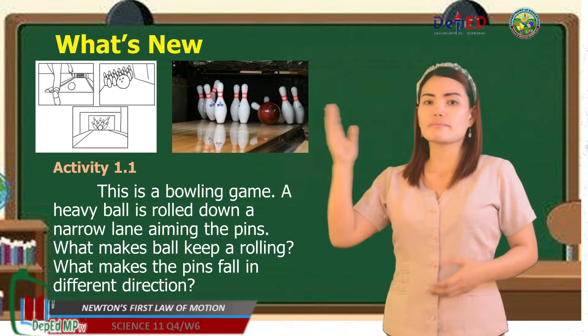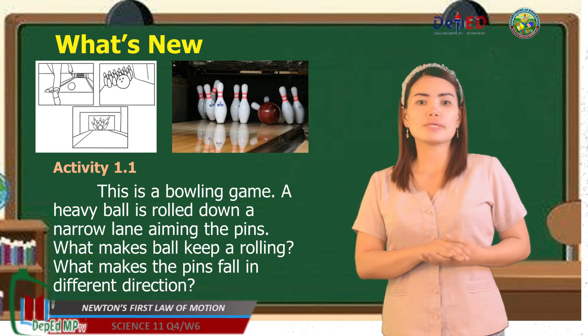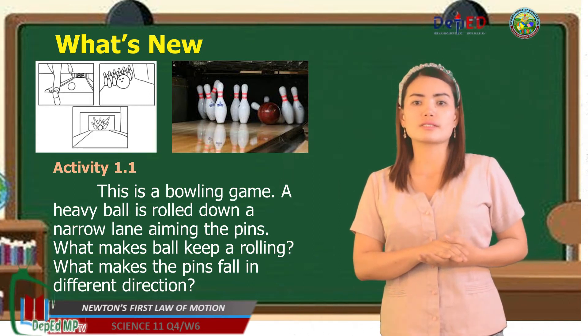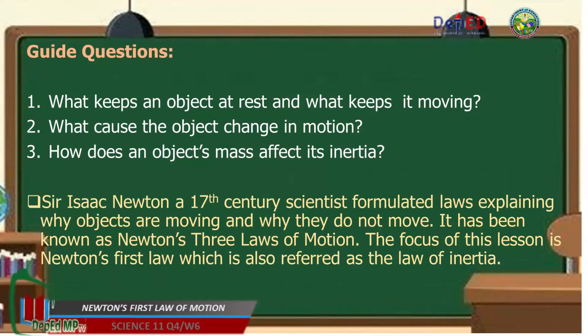This is a bowling game. A heavy ball is rolled down a narrow lane, aiming at the pins. What makes the ball keep rolling? What makes the pins fall in different directions? See your self-learning module on page 6. So, we're going to answer these guide questions. Number 1. What keeps an object at rest and what keeps it moving? Number 2. What caused the object change in motion? Number 3. How does an object's mass affect its inertia? Okay class, we can be able to answer the questions as we go along with our discussion.